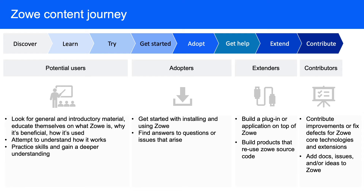Extenders want to know how to build on top of the platform and contributors would like to get involved to make an impact. So we need to create content assets for each user journey phase here to meet the needs, and that's what we were doing over the past few years.